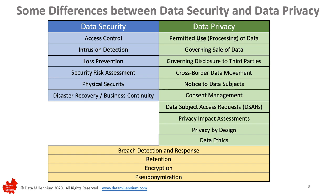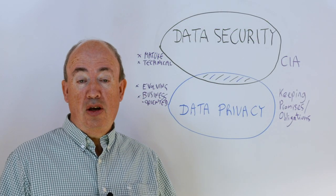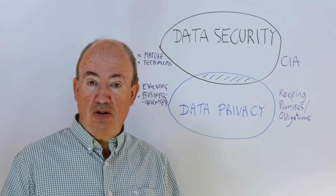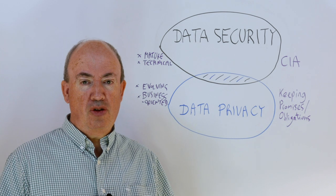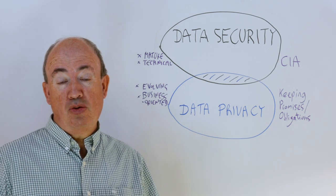In terms of data privacy, we have the permitted use and processing of data, governing the sale of data, governing disclosure of personal information to third parties, cross-border data movement, notice to data subjects, consent management, and data subject access requests — where somebody requests the enterprise does something with their data, like delete it or provide them with a copy. Also privacy impact assessments, privacy by design, and data ethics. There are also some shared areas, such as breach detection and response, retention, encryption, and pseudonymization, though even within those, data security and data privacy have rather different roles to play.